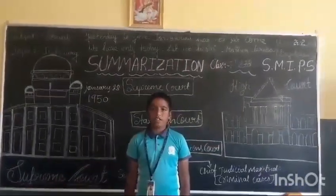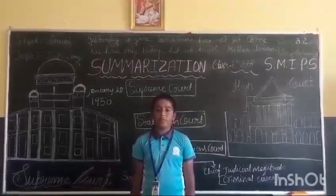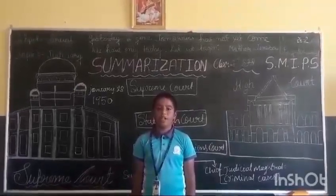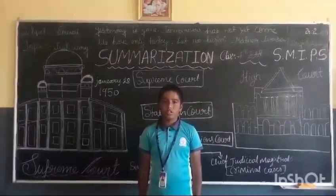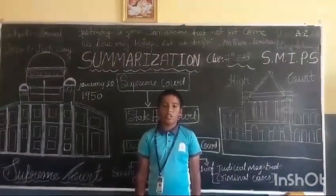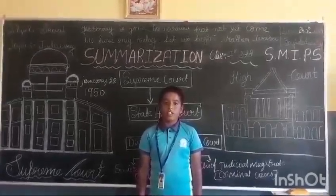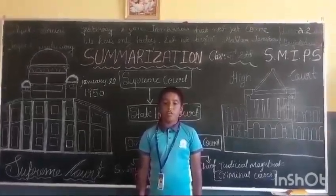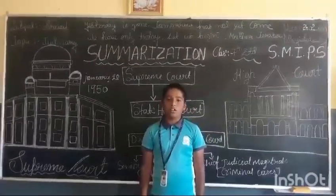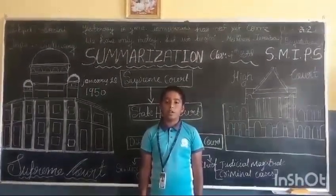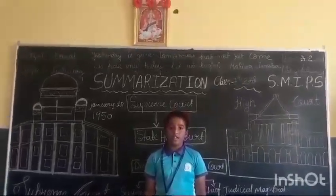The criminal court is also known as the magistrate court. The Criminal Procedure Code came into force in 1974. They are also known as the district magistrate court. The highest criminal court at the district level is the Sessions Court. The district judge performs the functions of the Sessions Court judge. The criminal court takes up crimes like robbery, murder, and others.